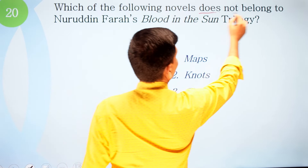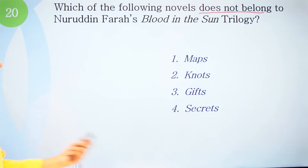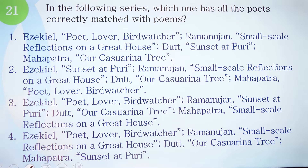Question twenty: Which of the following novels does NOT belong to Nuruddin Farah's 'Blood in the Sun' trilogy? Options: one, 'Maps'; two, 'Knots'; three, 'Gifts'; four, 'Secrets.' The correct option is number two — 'Knots' does not belong to the trilogy. 'Maps,' 'Gifts,' and 'Secrets' are the three parts of Nuruddin Farah's 'Blood in the Sun' trilogy.